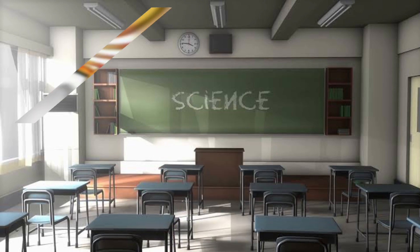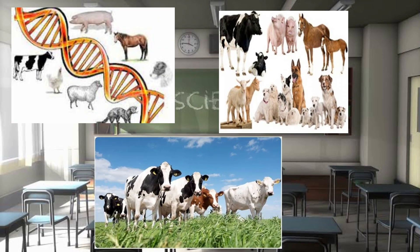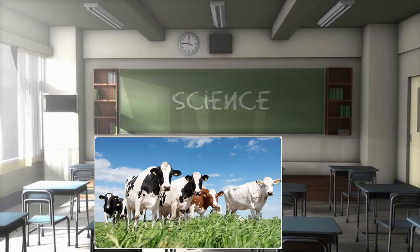In animal breeding, genetics is used to selectively breed animals with desirable traits, leading to higher productivity and more sustainable agricultural systems.